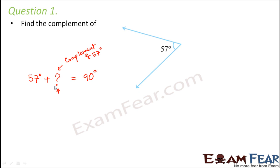So how would you find this angle? If you assume this angle as x, x will be equal to 90 degrees minus 57 degrees because you transpose 57 to the right-hand side. Therefore, the complement of 57 degrees equals 90 degrees minus 57 degrees, which is 33 degrees. So that means if you add 33 degrees, you actually get 90 degrees.